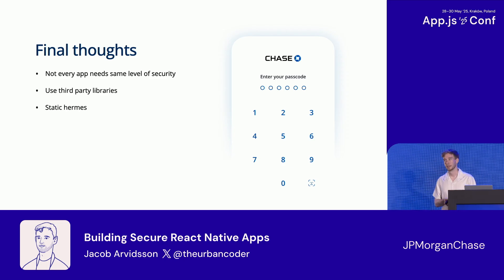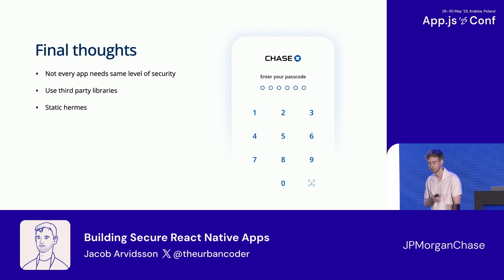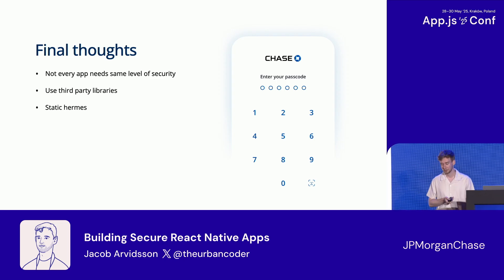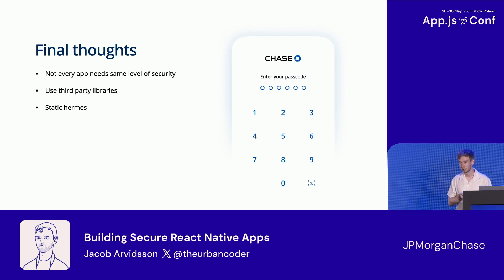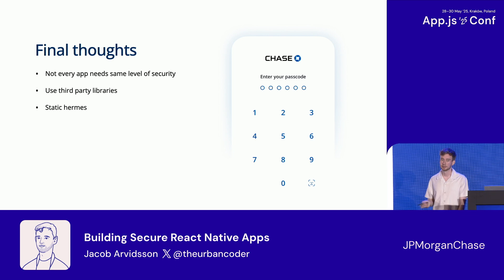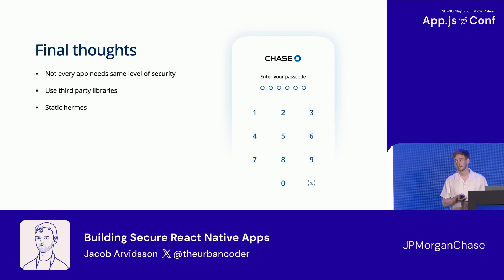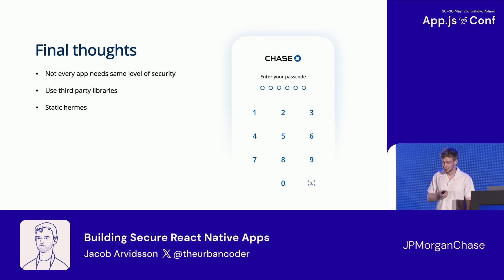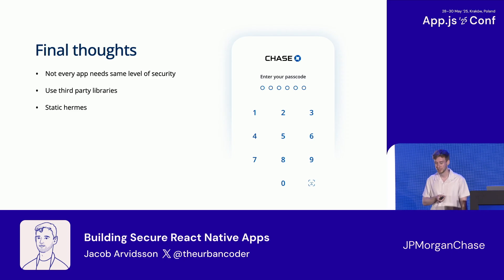Lastly, there's a PR open for React Native right now called Static Hermes. Static Hermes is the next generation of the Hermes engine and addresses a lot of the things I've been talking about on the JavaScript side — basically bringing the JavaScript and React Native world closer to how we do things on native. It's not going to be one-to-one, so certain companies will still need additional steps, but it's definitely moving us in the right direction.